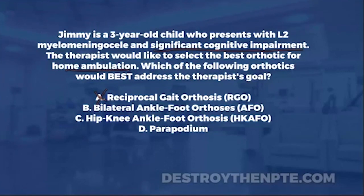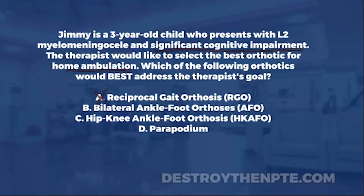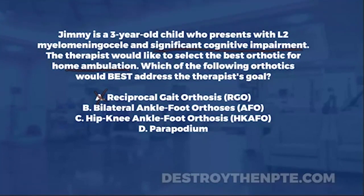Looking at answer B — bilateral ankle foot orthoses. With L2 myelomeningocele, the L2 nerve root affects hip flexors. Going down the chain, that means problems with knee extensors at L3, and ankle dorsiflexors at L4. Bilateral AFOs can give ankle stability, but they do nothing for hip or knee weakness. They're just not enough to support home ambulation and would leave the patient at risk for falls. Eliminate B.